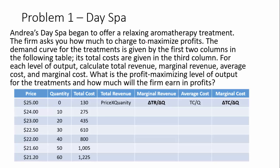Total revenue is going to be the price times the quantity. For the first row it's going to be zero because we have zero quantity. Marginal revenue is also going to be zero because our quantity is zero — there is no change. Average cost is going to be zero as well since quantity is zero. So all values in the first row are zero.